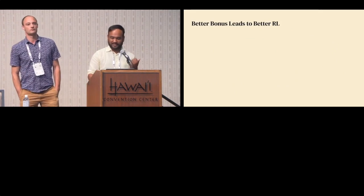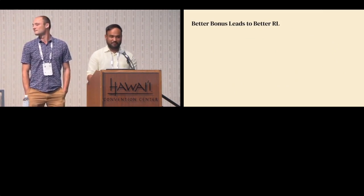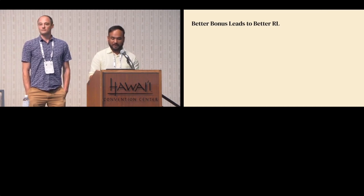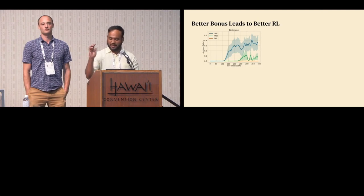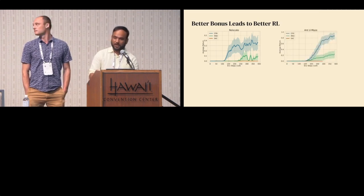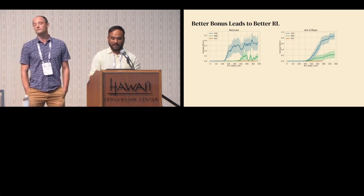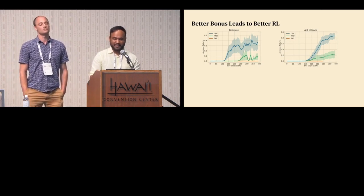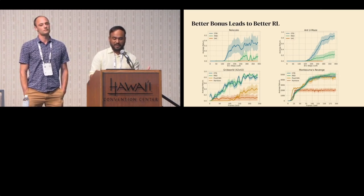So we can predict accurate counts — but does it lead to more sample efficient RL? We've tried this on a bunch of domains. The short of it is that we do better than existing methods on most tasks. We have two examples of continuous control sparse reward tasks where we outperform vanilla RL and RND, and discrete control tasks like gridworld and Montezuma's Revenge where we do better than vanilla RL and roughly tie with RND.